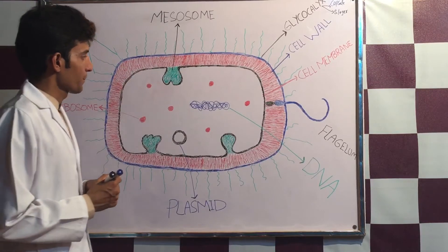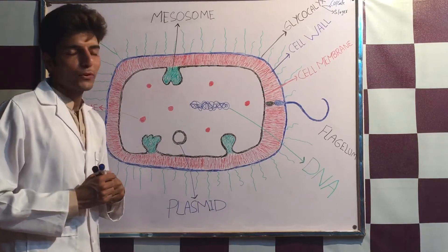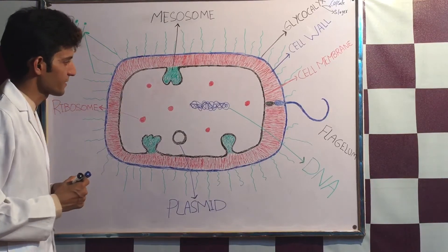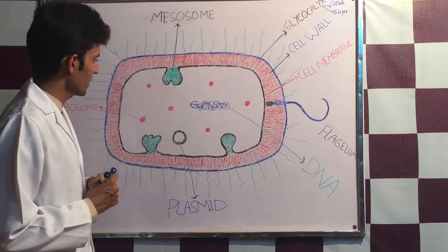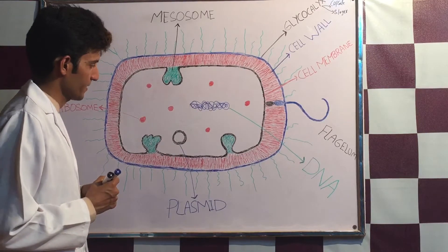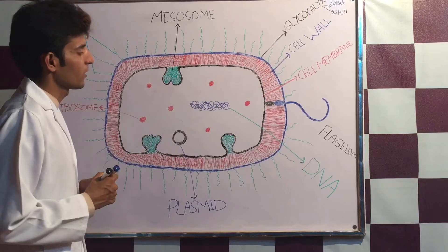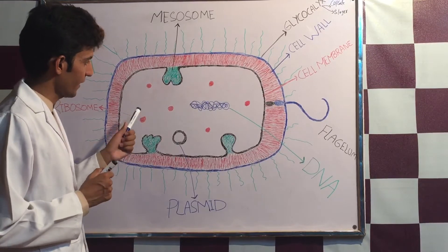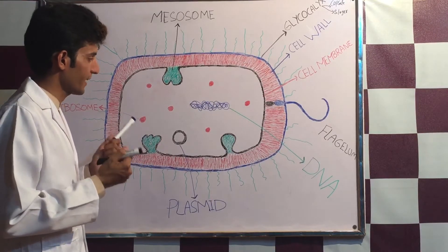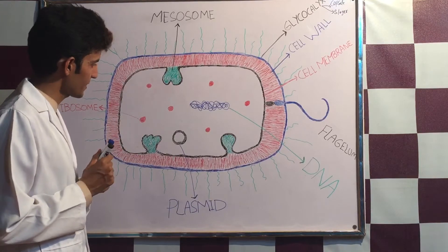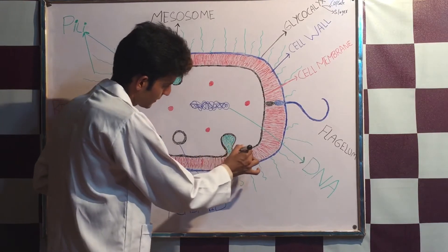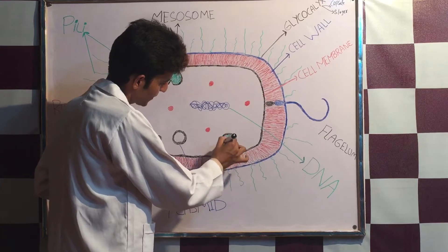Remember, bacteria — being prokaryotes — do not have membrane-bounded organelles like mitochondria or Golgi apparatus. You may be thinking: if they don't have mitochondria, how do they gain or generate ATP or energy?